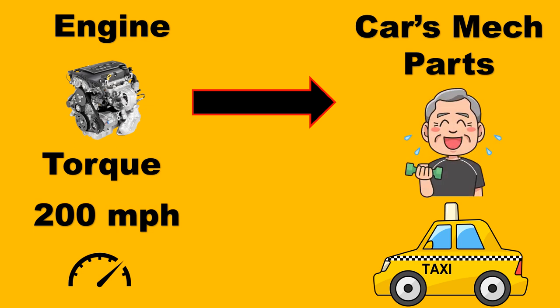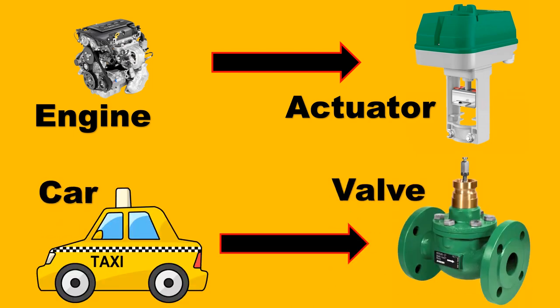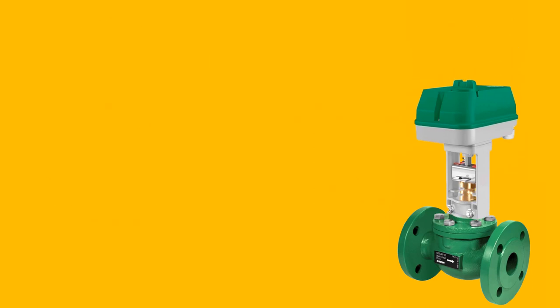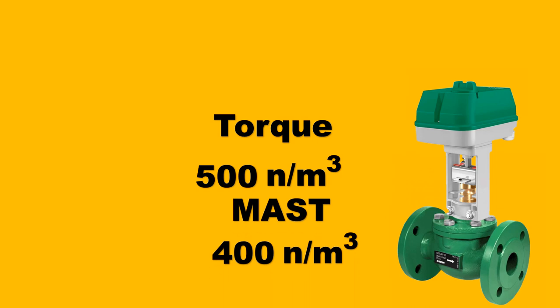But what does this have to do with the valve? The engine can be very clearly compared to the actuator, and the car — especially its mechanical parts — can be compared to the valve. Now imagine we take this assembly of actuator and valve together, and the actuator can produce a torque of 500 N·m. However, the MAST is 400 N·m — that is, the Maximum Allowable Stem Torque is just 400, but we can give 500. Is this combination good?